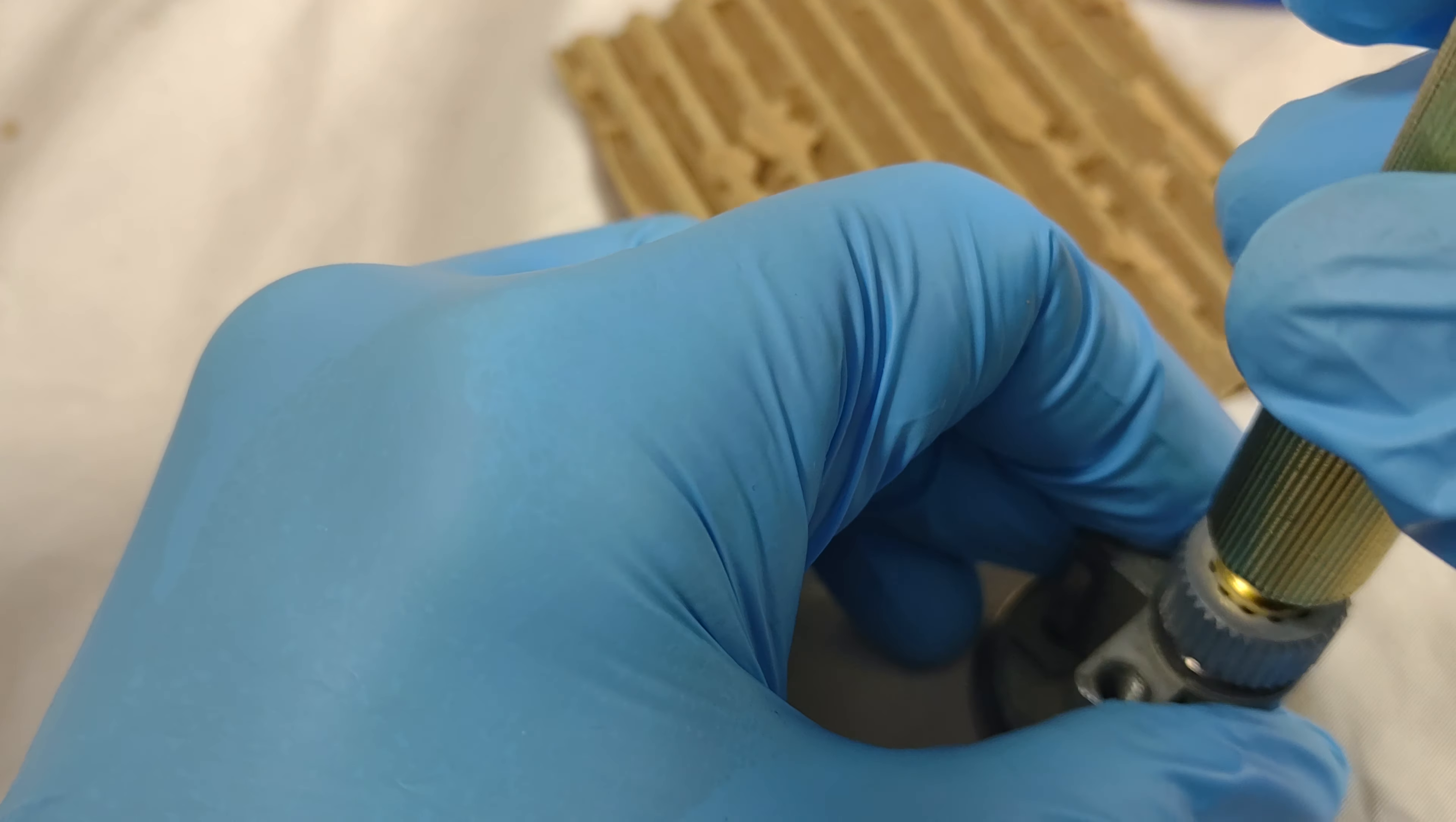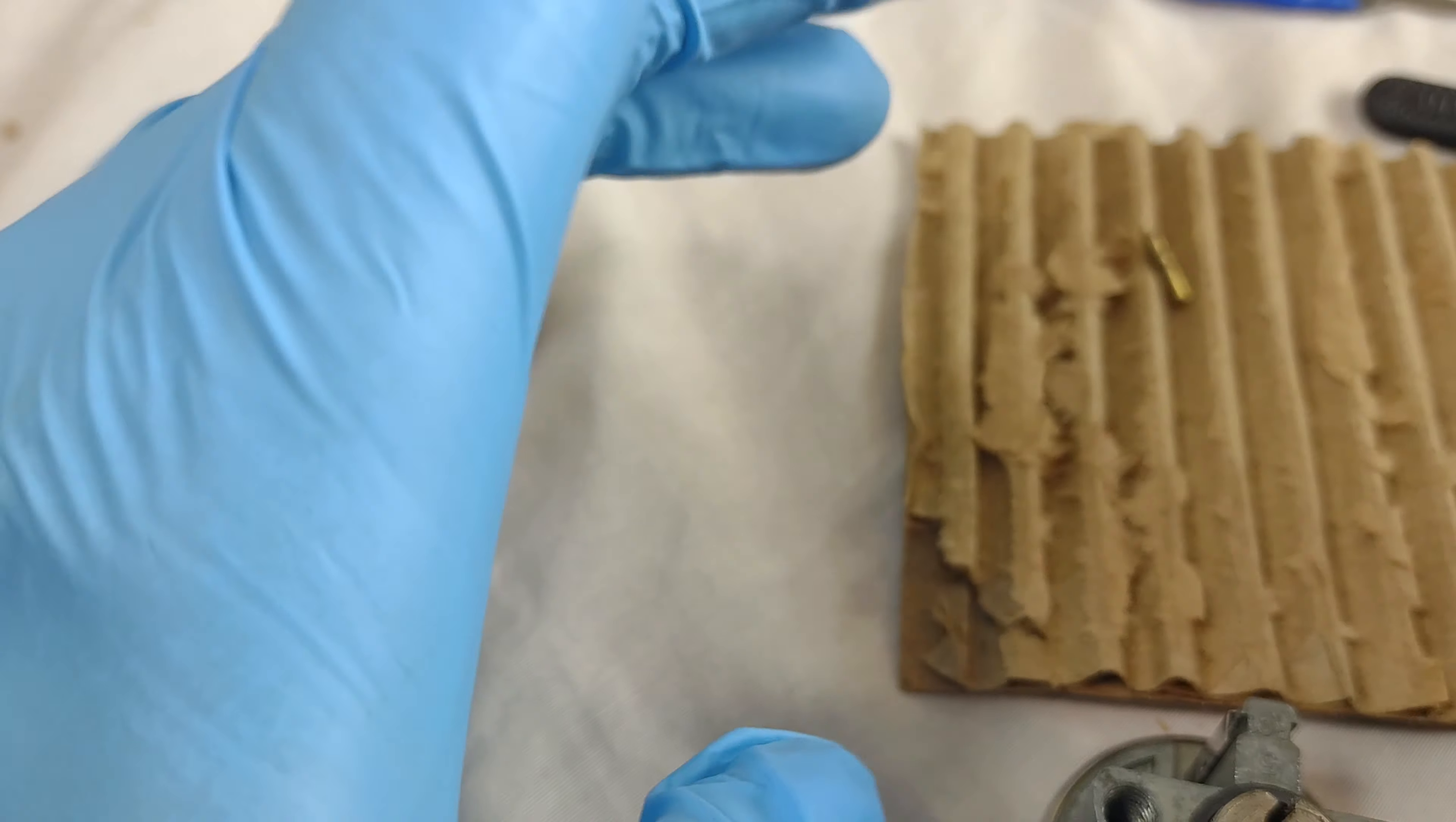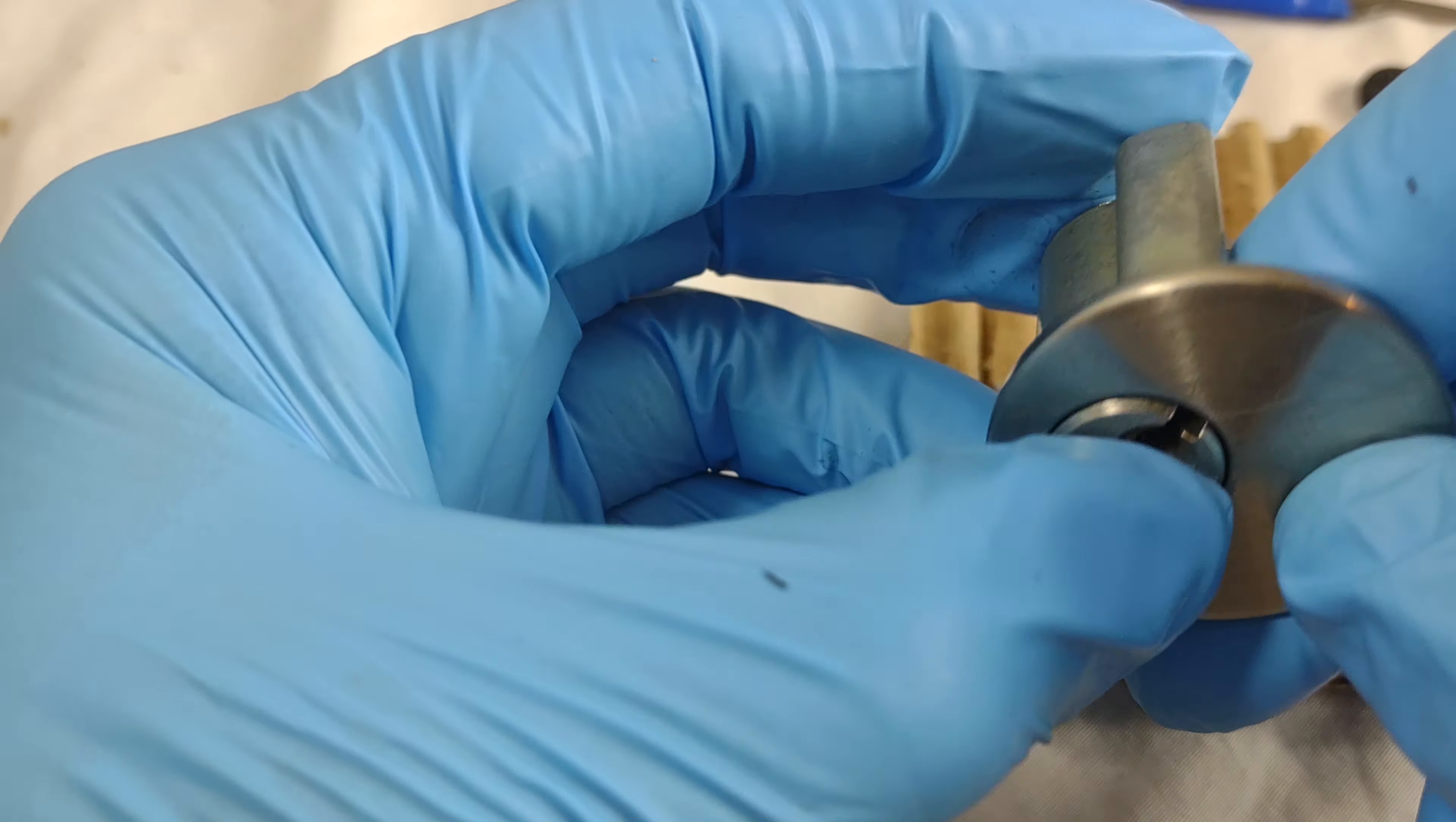One thing that's weird about this lock is that it seems like it's a Schlage keyway in a Quickset body. For starters, this cap remover normally only works on Quicksets.